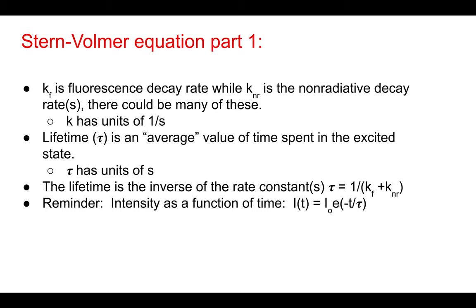Stern-Volmer equation — what are we going to calculate? Let's consider two rate constants: the fluorescence decay rate Kf, and the non-radiative rate Knr. These are first-order rate constants and have units of 1/seconds. For second order, for example, it would have units of 1/(seconds·molarity) — we'll see that next slide. The lifetime is the inverse of the rate constants — lifetime has units of seconds, while rate constants have units of inverse seconds. We'll come back to this in a little bit.